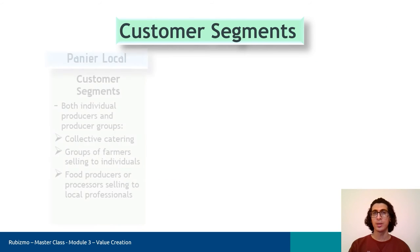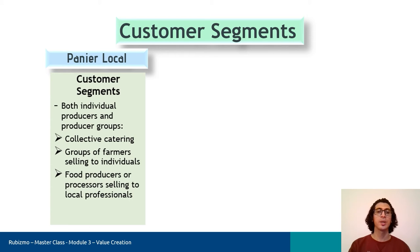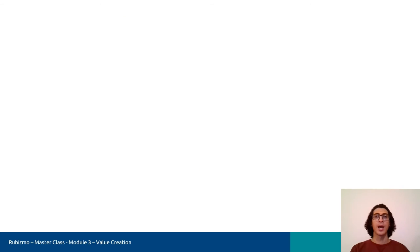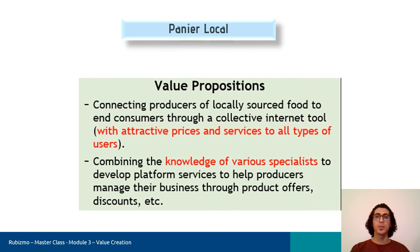Now let's look at Panyol Local's customer segments. There are individual producers and producer groups, including collective catering, groups of farmers selling to individuals, and food producers or processors selling to local professionals. The company has a group of customers who have similar needs and behaviors — they need a tool that can connect them to the final consumer. After identifying the need of this group, the company created a collective internet tool with attractive prices and services to all types of users. In addition, they combine the knowledge of various specialists to help producers manage their business.